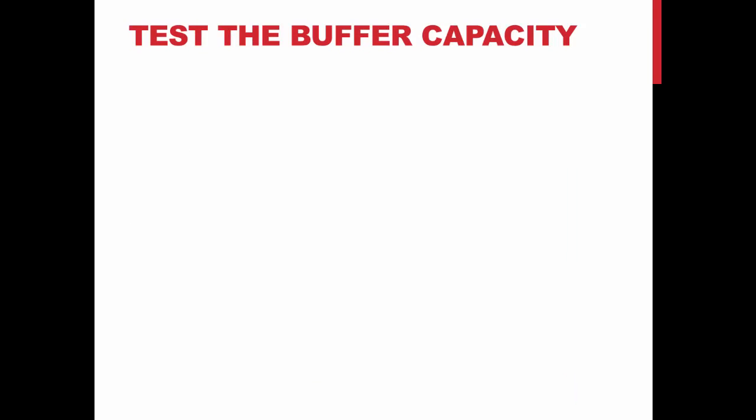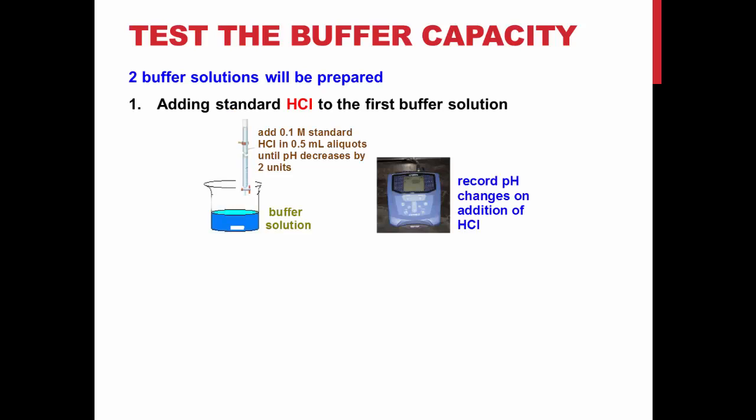You will obtain a pH meter and perform a two-point calibration. Set up a burette containing 0.1 M hydrochloric acid and place one of your prepared buffer solutions, containing a magnetic stir bar, below it. Place the pH and temperature electrodes in the solution, high enough that they won't come into contact with the magnetic stir bar.